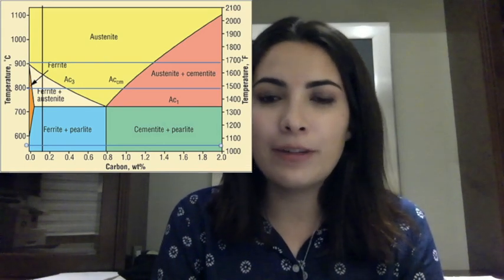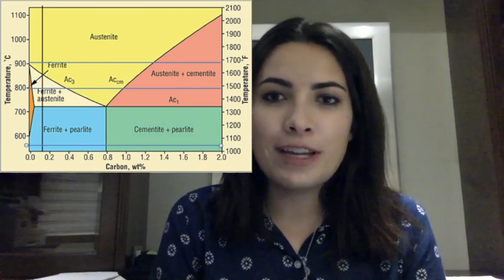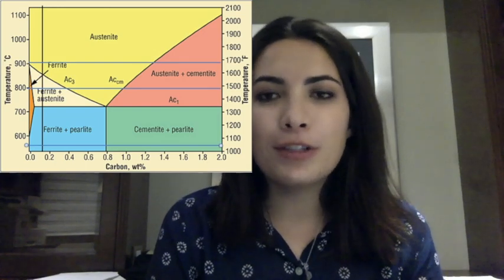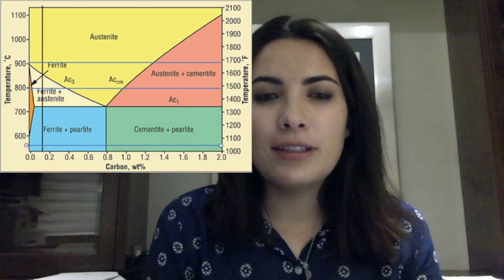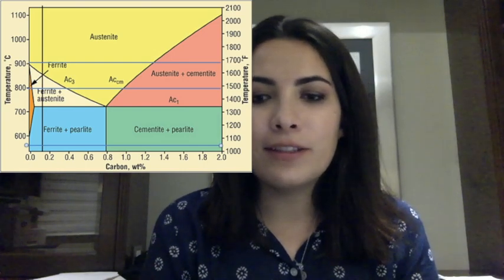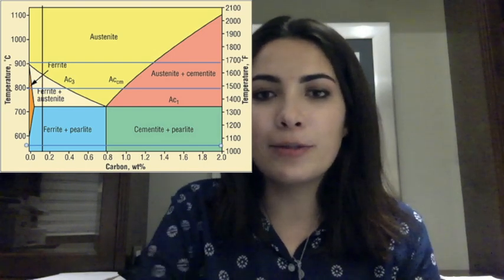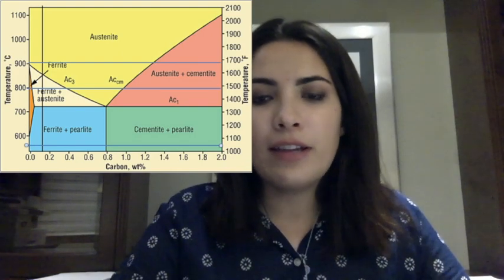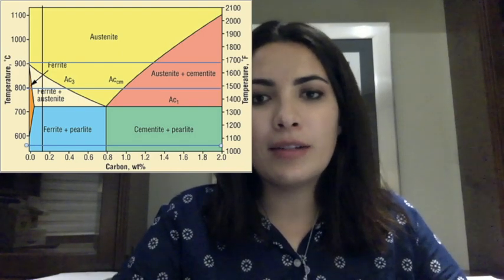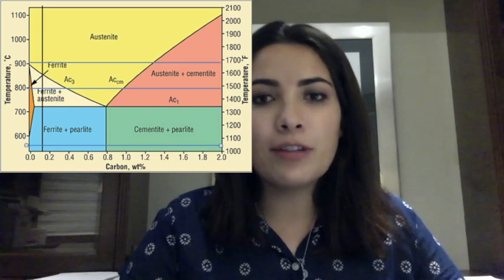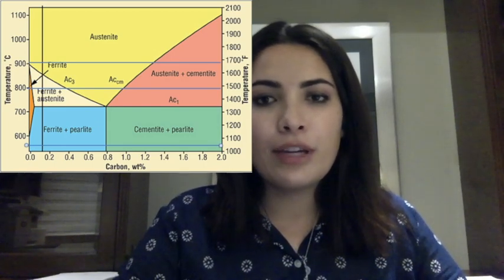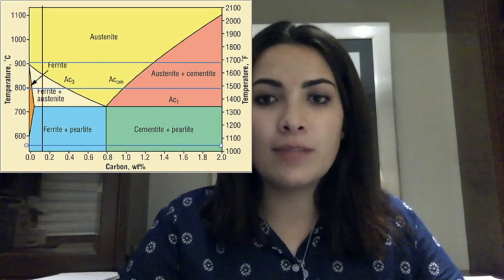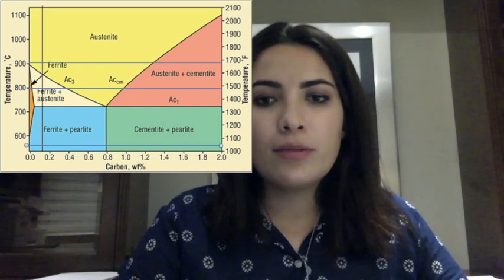With the one piece left, we raised the temperature again to 200 degrees. As you can see in the graph, 200 degrees is still in the ferrite plus pearlite area, so we did not change phases — we stayed in the same phase as at 50 degrees. After raising the temperature to 200 degrees, we dropped back to 50 degrees by quenching the last piece in water.